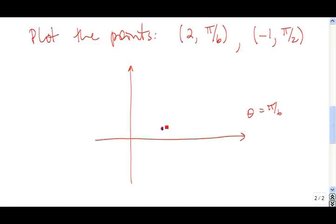That point has polar coordinates (2, π/6). To get to the point (-1, π/2), I go through the angle π/2, which puts me on the positive y-axis. Since r is negative, instead of going up along this ray 1 unit, I go in the exact opposite direction, 1 unit. That puts me about right there. So in polar coordinates, this point has the label (-1, π/2).